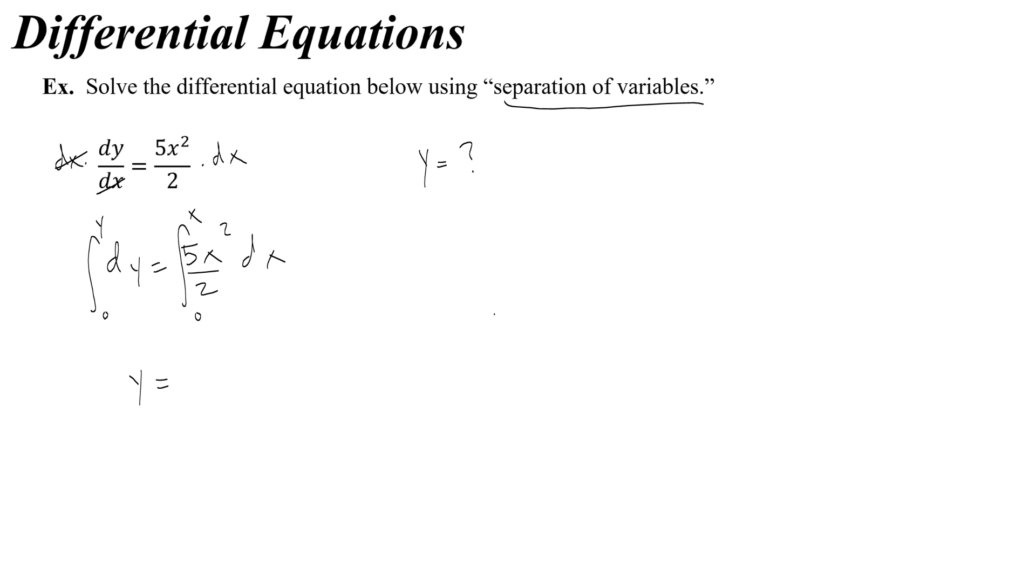Doing this basically just eliminates our constants of integration, so we would get y on the left here, and this would give us the same thing 5/6 x cubed, but we would have no constant of integration on that side of the equation, and we would get ourselves a definite answer.